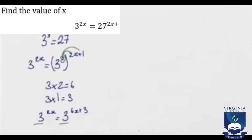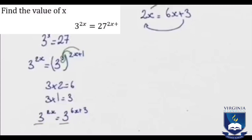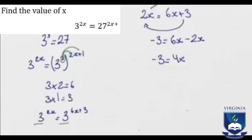So we write 2x equals 6x plus 3. Now we need to get the x terms on one side, so we move 2x to the right and 3 to the left. That gives us negative 3 equals 6x minus 2x, which is 4x. Dividing both sides by 4, x is equal to negative 3 over 4.